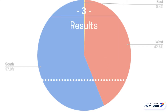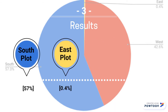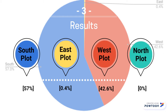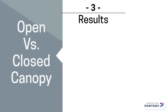Our results of infestation at BFL were that the south plot had 57%, the east plot had 0.4%, the west plot had 42.6%, and the north plot had 0% because there were no cacti present. A pattern found throughout our results was a correlation between infestation and open canopies compared to closed canopies.